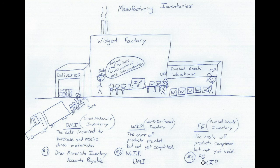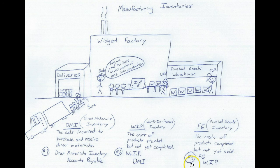That is the flow of inventory through the manufacturing process. Just remember there are three points of inventory — it's either in DMI, it's in WIP, or it's in finished goods. That covers direct materials; we'll talk about indirect materials in a later video, and we'll also talk about direct and indirect labor in a later video. Here are the three different journal entries that show DMI into WIP and then into finished goods. There you have it on manufacturing inventories — we'll move on to the next lesson.